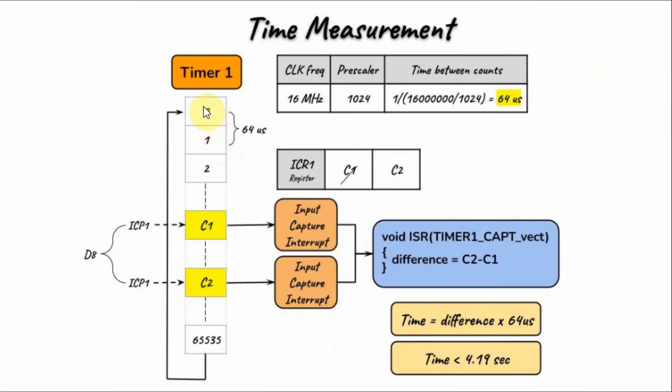The calculation of time must be done within the span of the overflow interrupt. Each overflow interrupt will take time of 64 microseconds multiplied by 2 to the power of 16, which gives us a time of 4.19 seconds. So the time we measure should be less than this value.